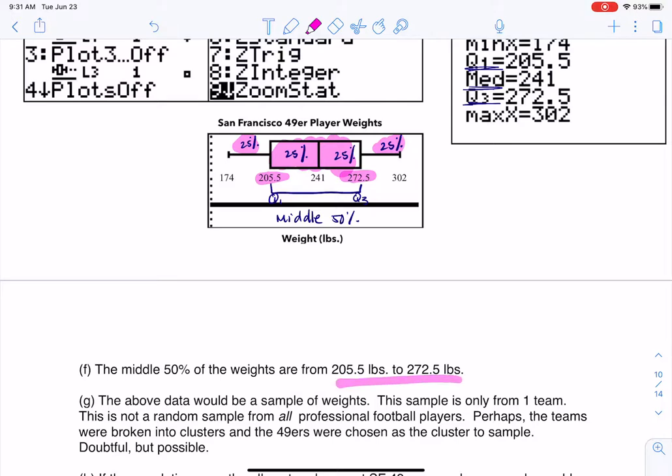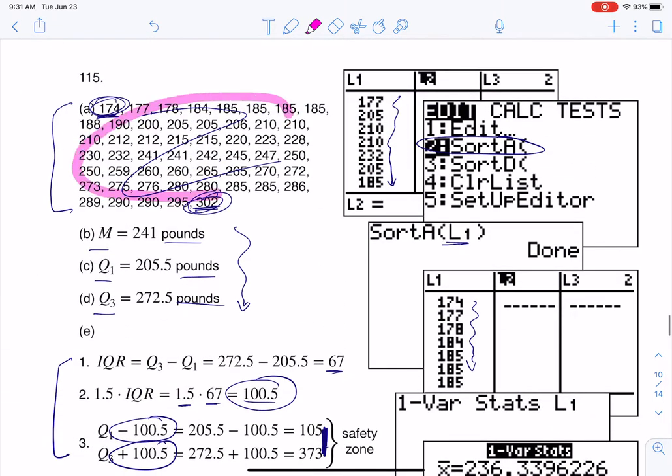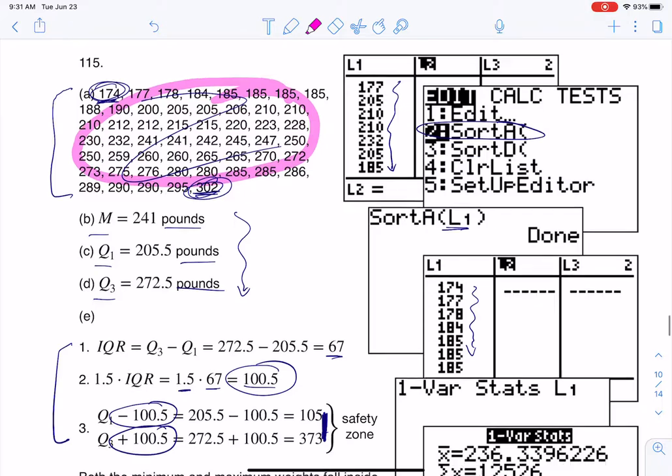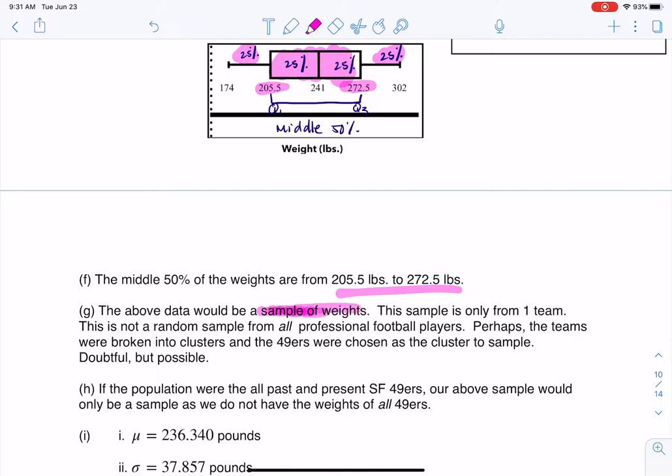So part G says, if our population were all professional football players, are these numbers that I have up here, if I want to generalize to all football players, is this a sample or is this the population? And this is only the 49ers. This is just a sample of all the people in the NFL. So I keep that as this is a sample of weights.